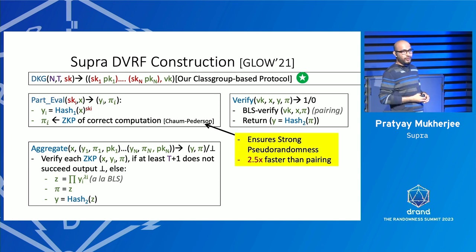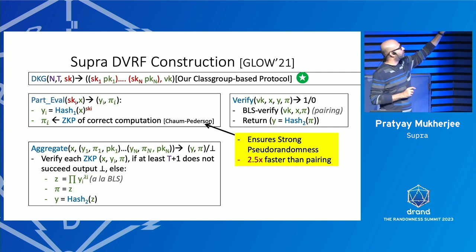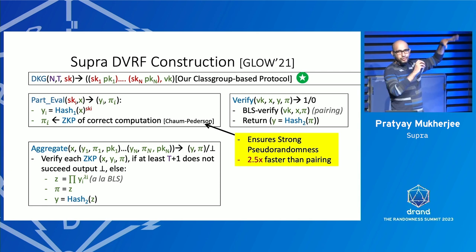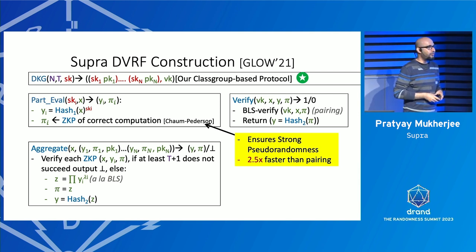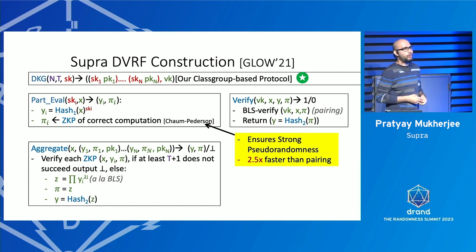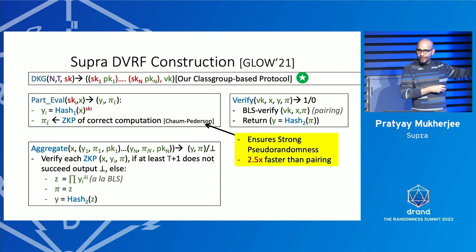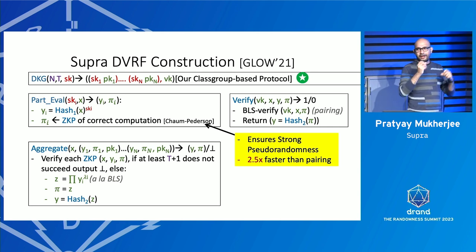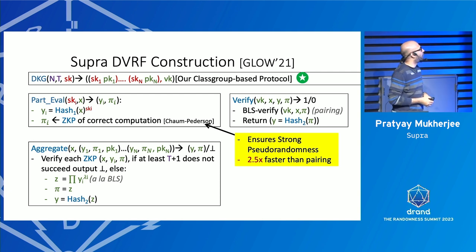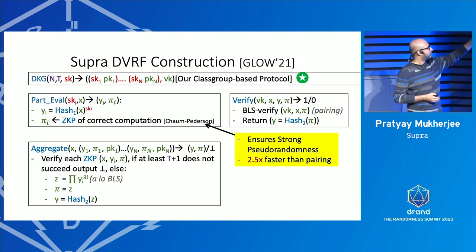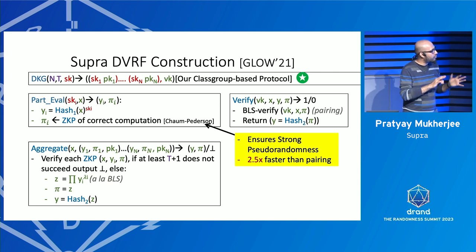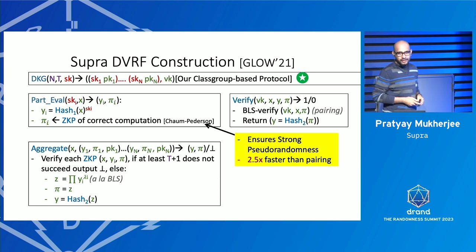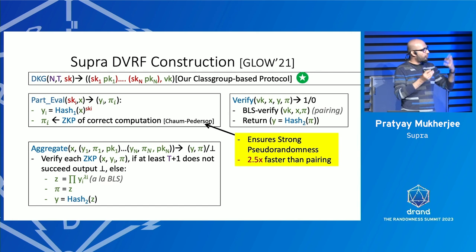The zero-knowledge proof option versus BLS partial verification without ZKP is already discussed in the Glow paper. DFINITY's randomness beacon was not using ZKPs. Using ZKPs gives two wins: you can prove strong pseudorandomness because ZKPs are simulatable, while pairing verification does not support simulability; and you gain roughly 2.5x computational efficiency in aggregation since you are not operating in the pairing group for that step.